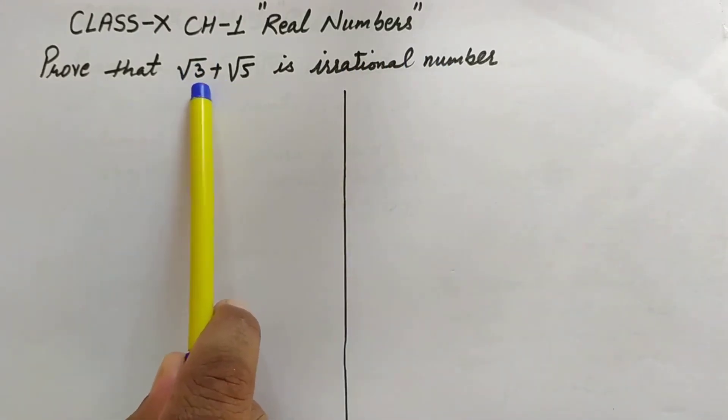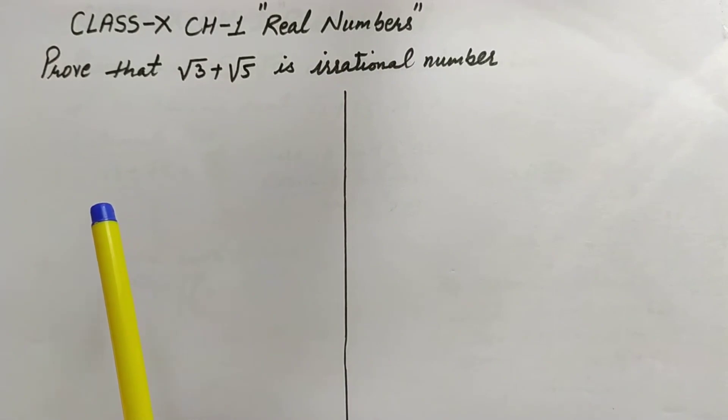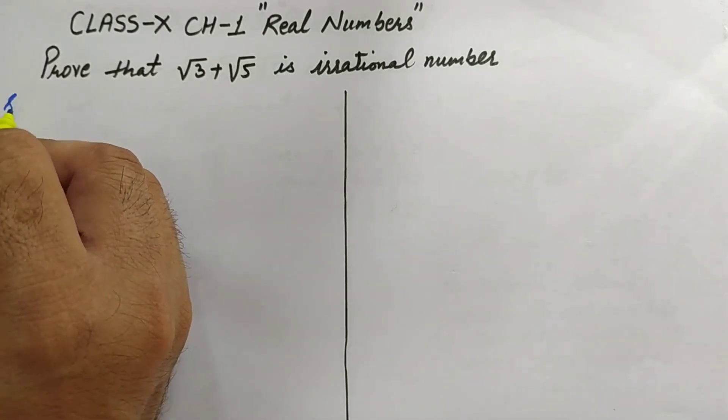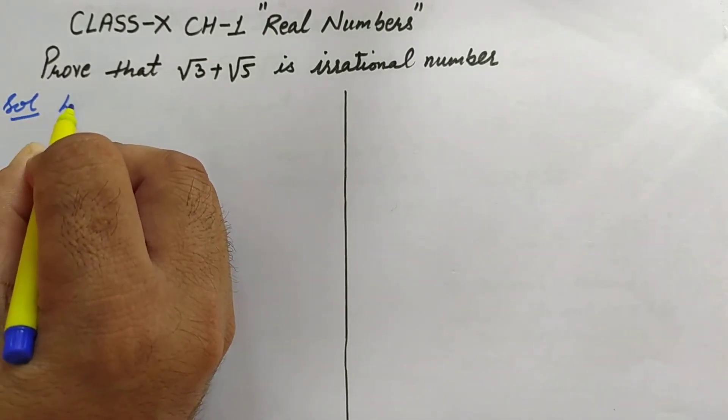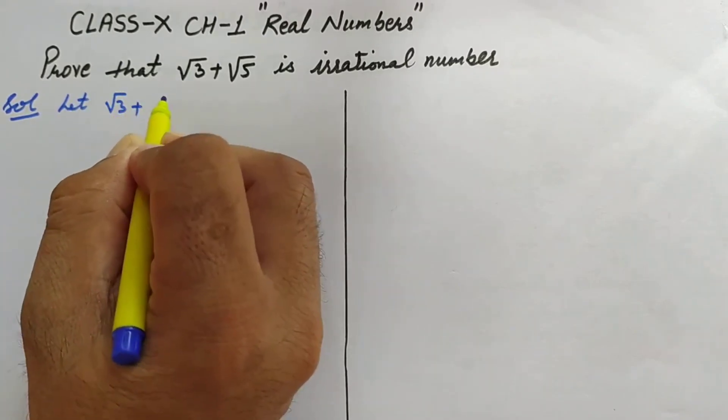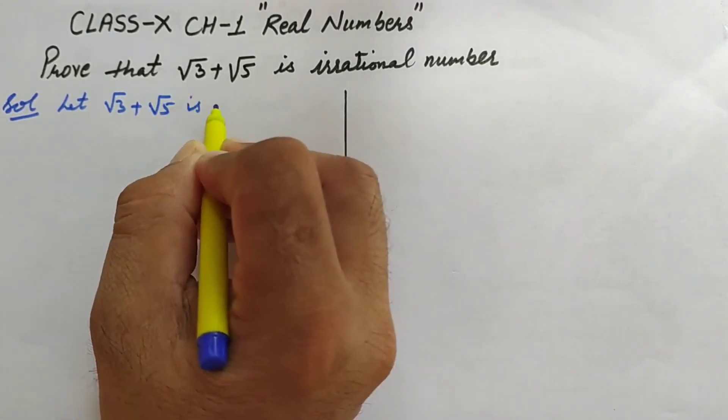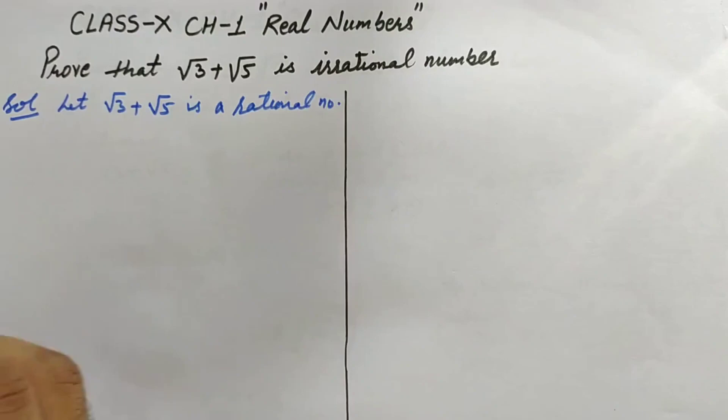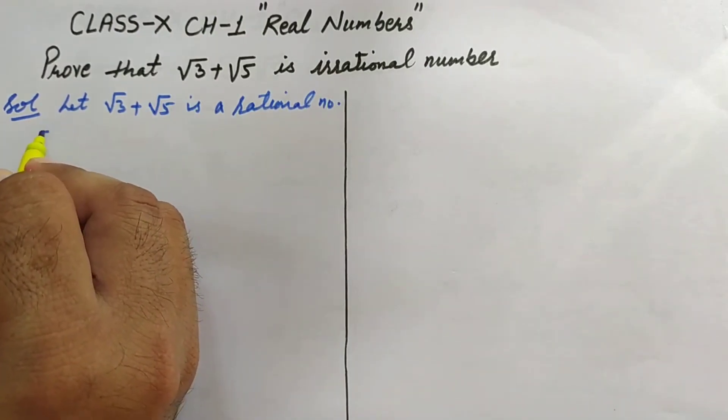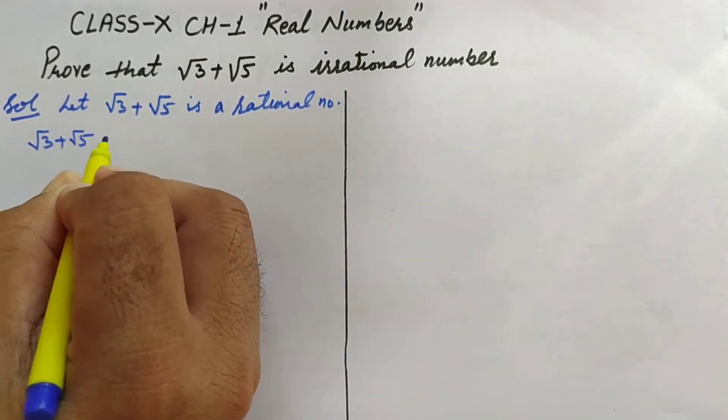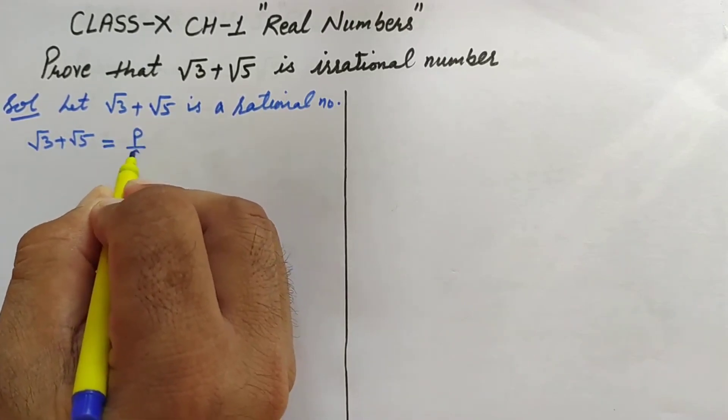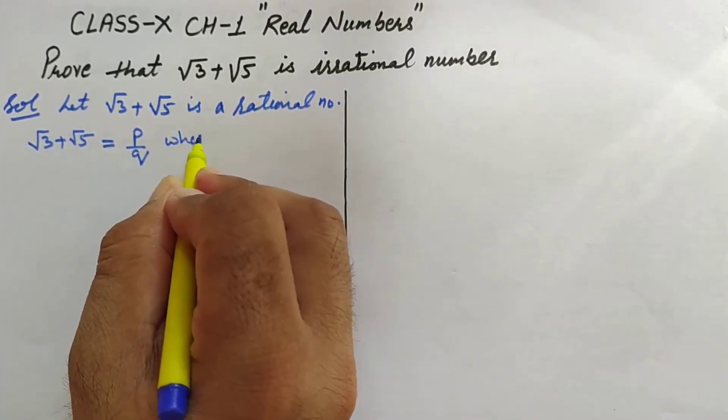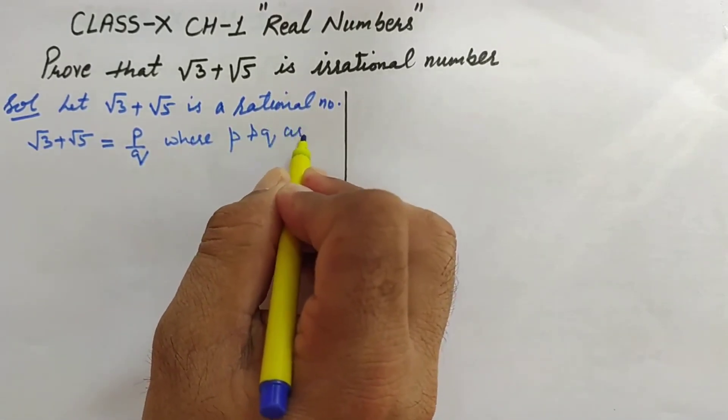For proving this as an irrational number, we will assume the opposite—that this is a rational number. Let √3 + √5 is a rational number. If it is a rational number, then you all know that rational numbers can be written in the form of p/q, where p and q are co-prime integers.